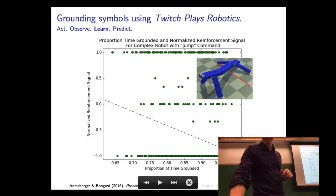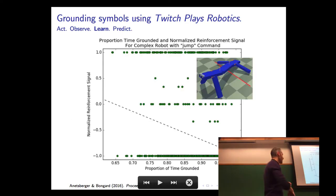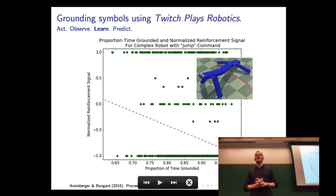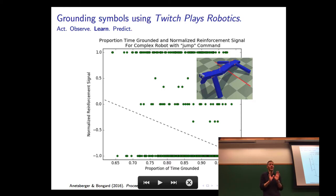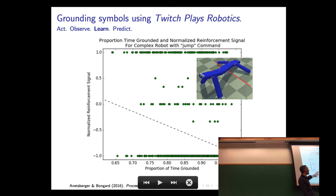They both understand what 'jump' means — jump means the more time I spend on the ground, the more punishment I receive from the crowd — but they understand it slightly differently. There was a question about our axis, where we came up with some transformation of the raw sensor data. We as the investigators had an idea of what jump means, so we kind of cheated a little bit — we combined touch information in a way that increased the likelihood that the robots would find a relationship.